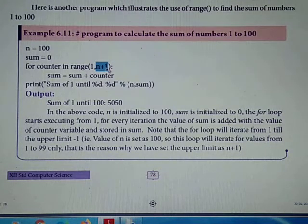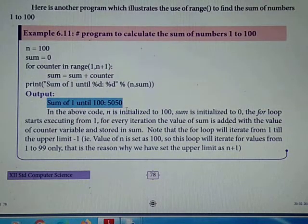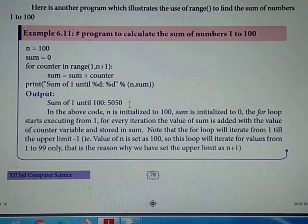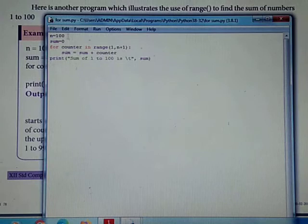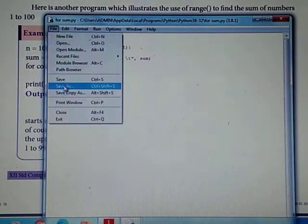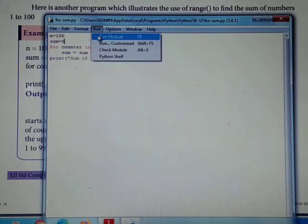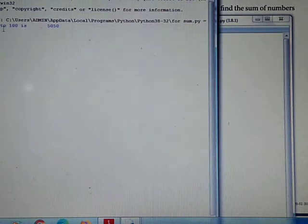Let's see this in the program. We don't have any else part here. Sum of 1 until 100 will be calculated. Now let me type this program - n equals 100, sum equals 0, for counter in range 1, n plus 1, sum equals sum plus counter, print. Now we save it and run.